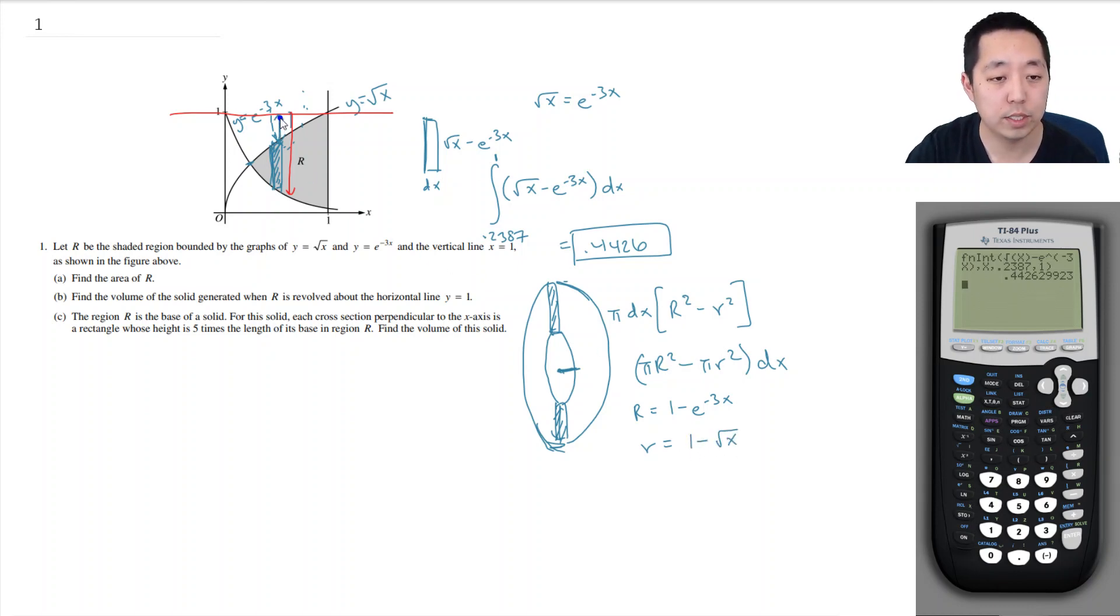So that's one minus square root of x. It's this y. Because what's this distance? It's this y value minus this y value. This y value is one, this y value is square root of x. So then basically we have it all set up. It's the integral, pi times one minus e to the minus three x squared minus one minus square root of x squared dx. And so this is the volume of each one of the disks. We're adding up all the disks from x equals 0.2387 all the way to one.